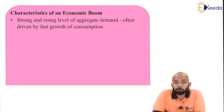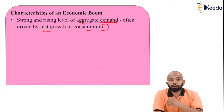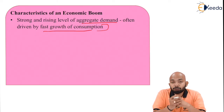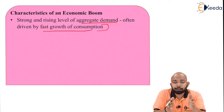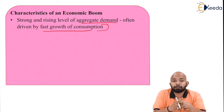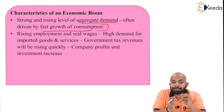The characteristics of this economic boom or inflation are as follows. There is a strong and rising level of aggregate demand, often driven by fast growth of consumption. For example, if onions are in high demand because consumption is very high but supply is low, that cannot be called inflation. But consider a basic necessity like salt — even if salt prices go up, consumption won't go down because it is a basic necessity of life.